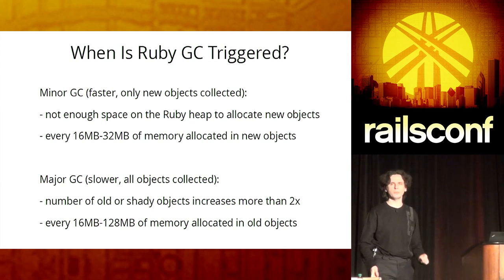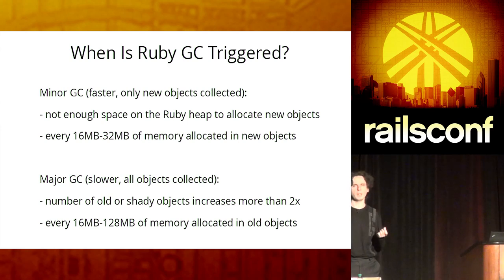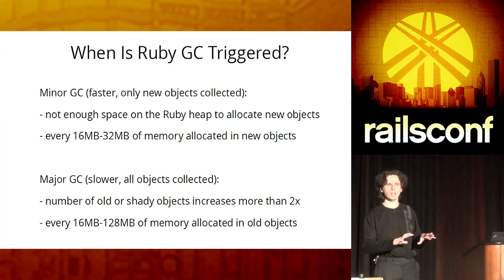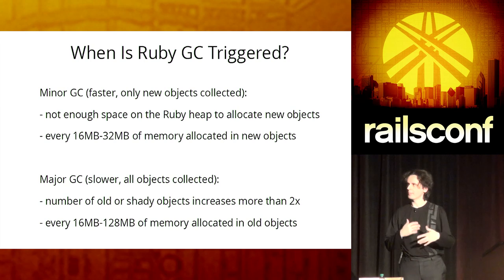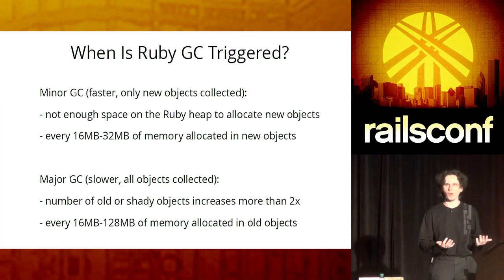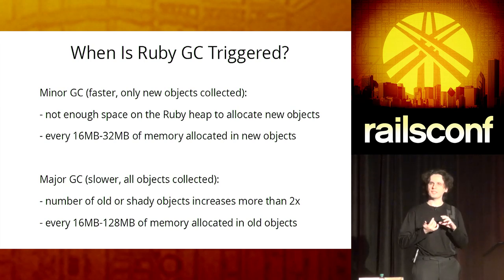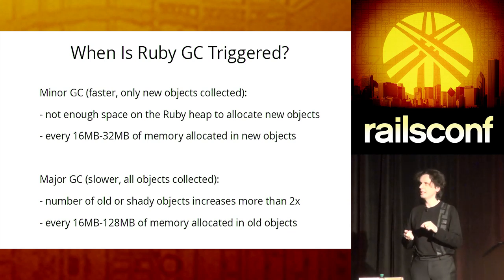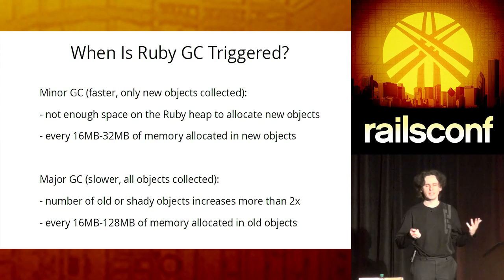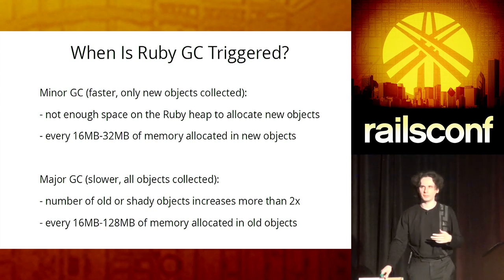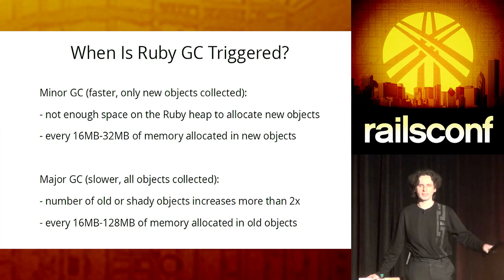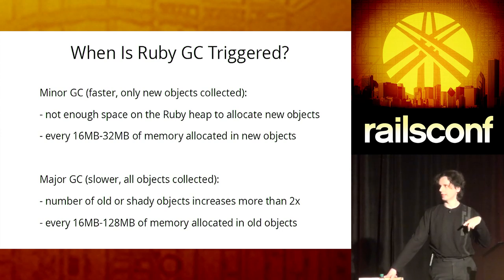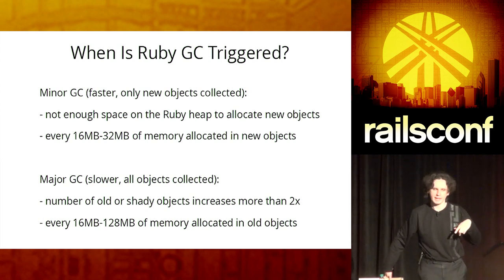Let's step back for a second and talk briefly about how GC in Ruby 2.1 works. Ruby 2.1 has two types of garbage collection. One is minor GC, which works only on new objects allocated after the previous garbage collection call, and the major GC, which operates on all objects. Minor GC happens when you don't have enough space in the heap to allocate new objects, or you allocate every other 16 to 32 megs of data. Major GC happens when too many objects become old or shady, and when they grow 16 to 128 megs.